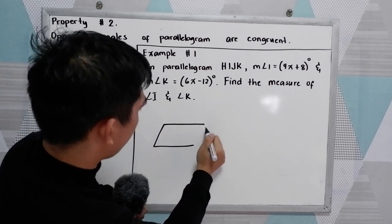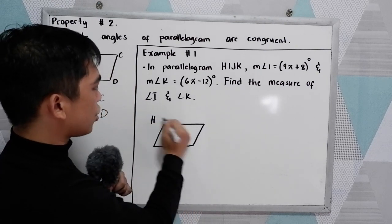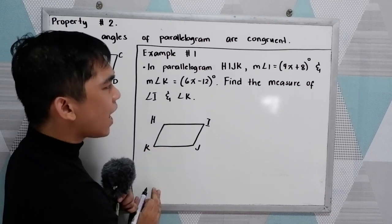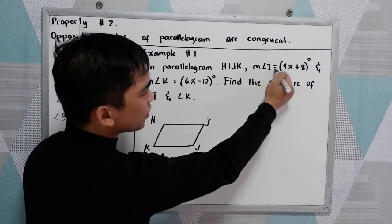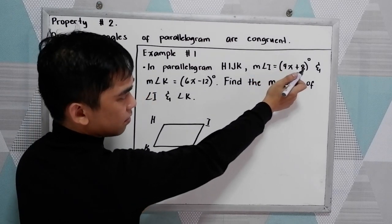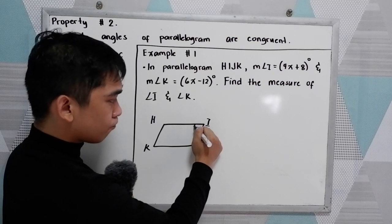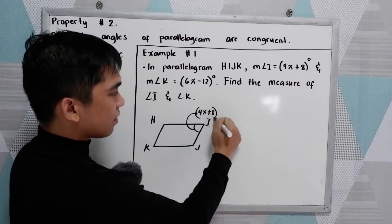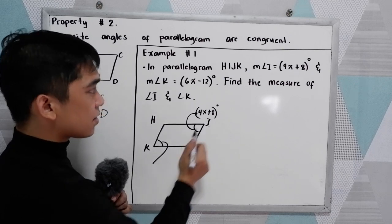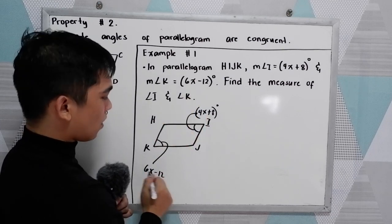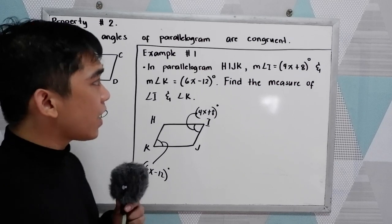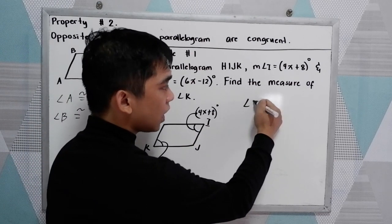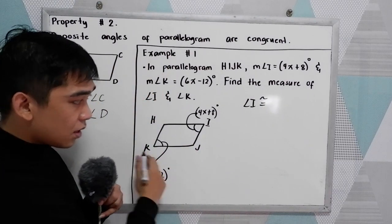We have parallelogram HIJK — H, I, J, K. Measure angle I is 4x plus 8 degrees, and our K is 6x minus 12 degrees. Now, following our property number 2, angle I is congruent to angle K.